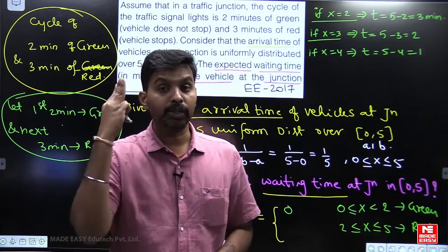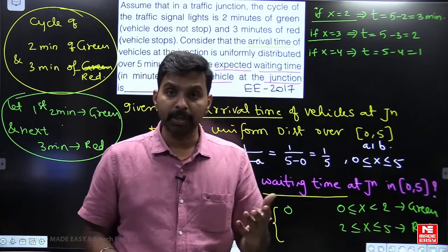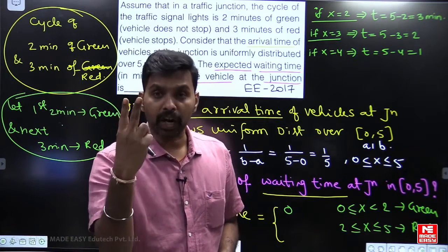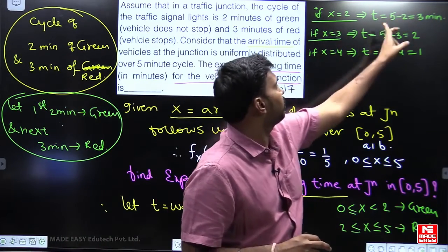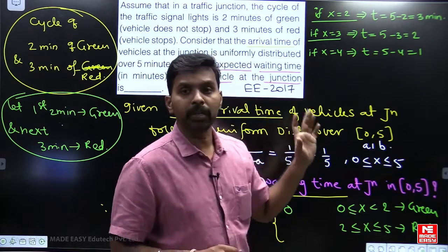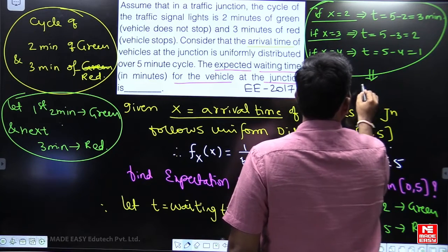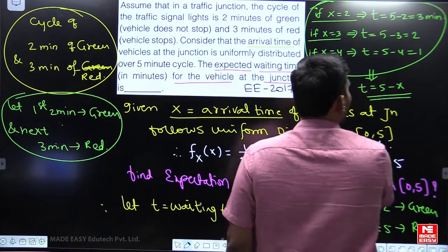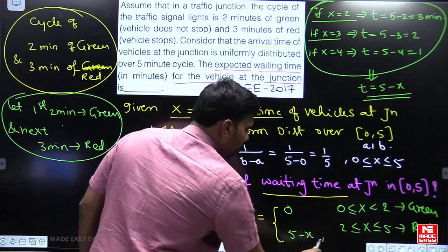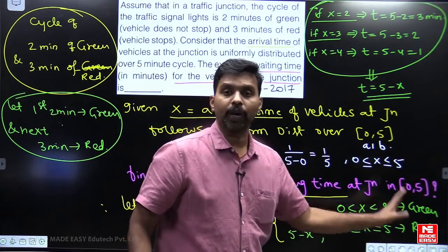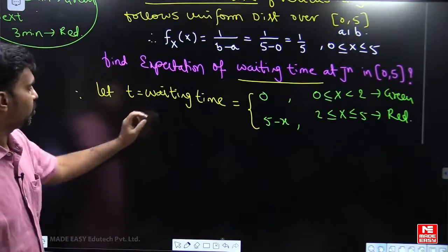So if you arrive at the 2nd minute, you need to wait 3 more minutes to get the green signal. If your arrival time is the 3rd minute, you wait 2 more minutes. This is calculated as 5 minus the arrival time. So the waiting time T = 5 − x for x in the interval [2, 5].